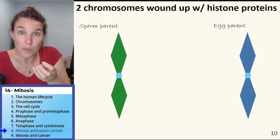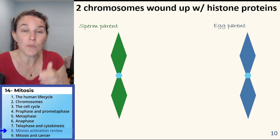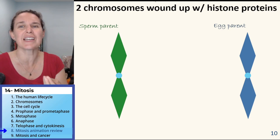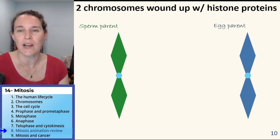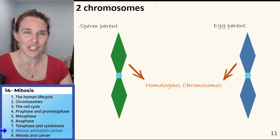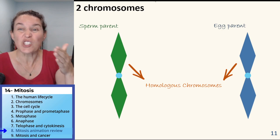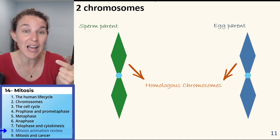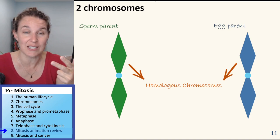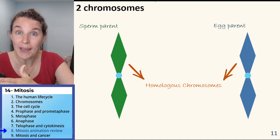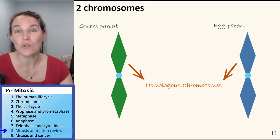When we wind them up, when we wind that chromosome, that DNA up with those histone proteins, then we get the condensed version. They look identical. They're the same shape, the same size, the centromere is in the same location. One came from sperm, one came from egg. Those are homologous chromosomes.